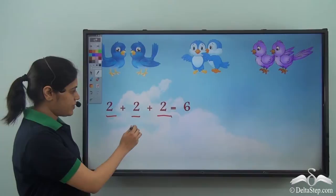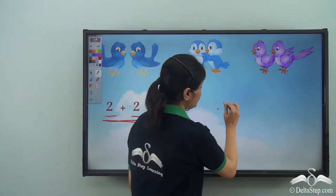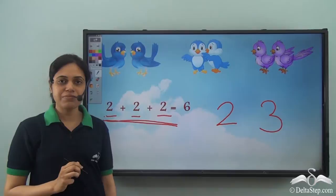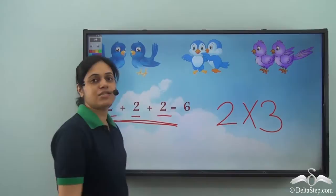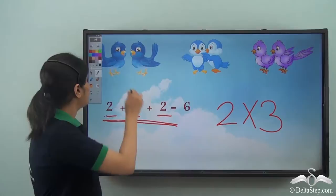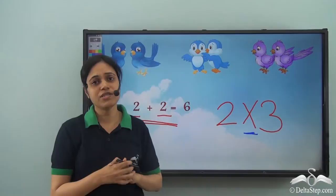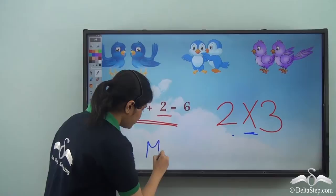Observe something: here, two is added three times. The same number, two, is added how many times? Three times. Now there is another way to write this — two added three times can be written as two, this symbol, and then three. This symbol looks like a cross or an x, so two cross three. This stands for two added to itself three times. This is the multiplication symbol.